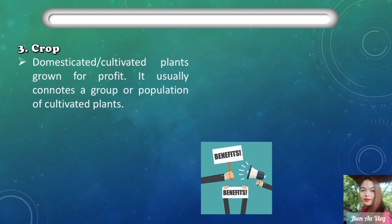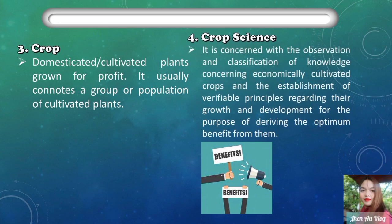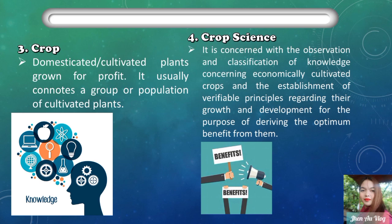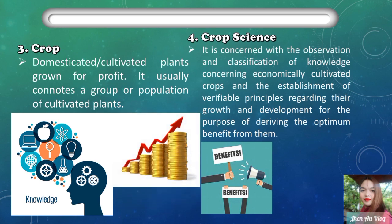A crop is a domesticated cultivated plant grown for profit; it usually connotes a group or population of cultivated plants. Crop science is concerned with the observation and classification of knowledge concerning economically cultivated crops and the establishment of verified principles regarding their growth and development, for the purpose of deriving optimum benefit from them. It covers the plant's growth from vegetative stage to reproductive stage until harvest, marketing, and secondary processing activities.